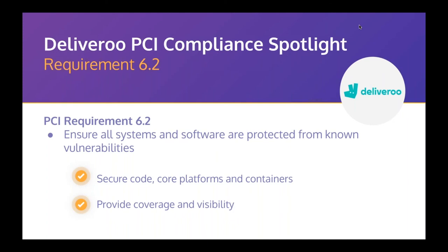Look out for future PCI DSS updates — the PCI Software Security Framework is just one update, and they'll start focusing more on open source dependencies. There's normally a grace period for significant changes, typically around a year to put controls in place. When considering requirement 6.2, your vulnerability management framework defines how to treat vulnerabilities identified by Snyk. Critical vulnerabilities must be resolved within one month, but you can also use compensating controls like a WAF or IPS in the short term.